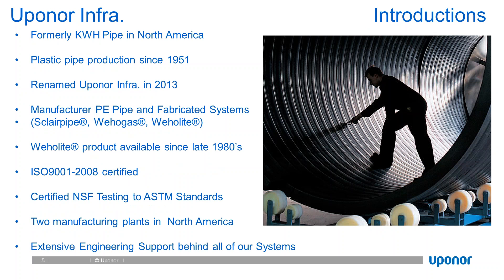A little bit about Uponor Infra. We were formerly KWH Pipe in North America, founded in 1951. As recently as 2013, we rebranded to Uponor Infra across North America by way of a corporate acquisition merger. We have been manufacturing polyethylene pipe and fabricated systems since 1951 and have a number of brands along that line—Sclairpipe, Weholgas, and Weholite—with Weholite being most applicable to our engineered systems portfolio.